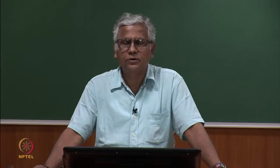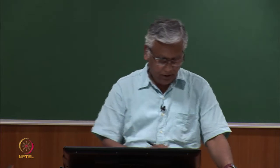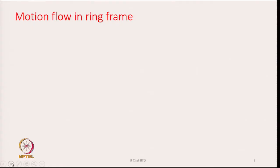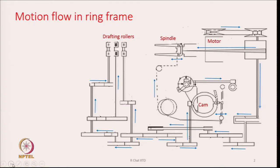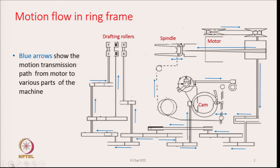Today's discussion is on analysis of drive, draft and production calculations. Looking at the gearing diagram of a ring frame shown here, the many blue arrows indicate the motion transmission path from the motor to the various parts of the machine.